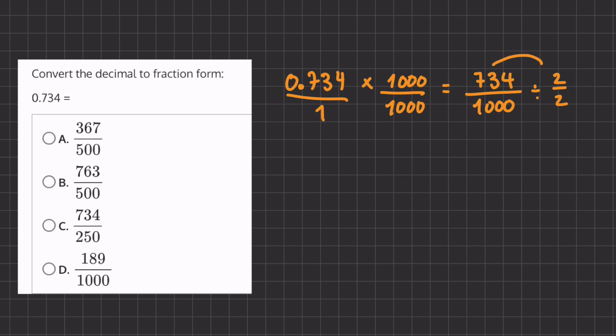Now it might be a little tough to recognize what 734 divided by 2 is, so let's break up this number. We can break it up into 700 plus 30 plus 4 and we'll divide each number by 2. This method is called the distributive property because it allows us to distribute this division of 2 into all the numbers in the parentheses.